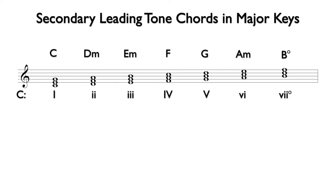Let's first notate the leading tone triad — this will be B diminished. Any major or minor chord in a key can be preceded by a secondary leading tone chord that makes that chord temporarily feel like one, the tonic chord of the key. Like with secondary dominants, the term for this is tonicized. A secondary leading tone chord tonicizes a chord other than one.